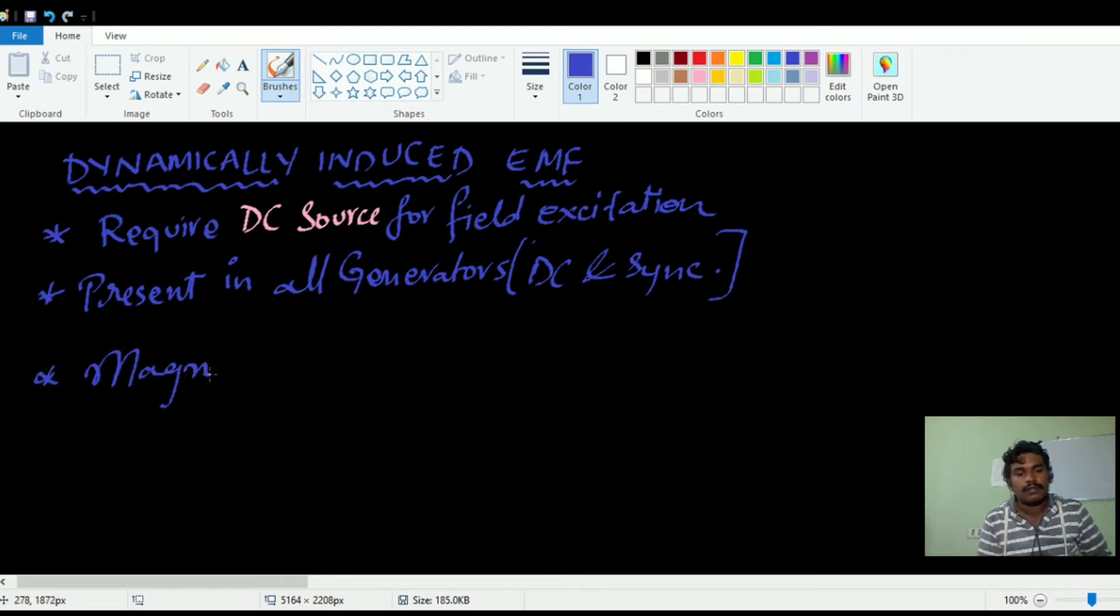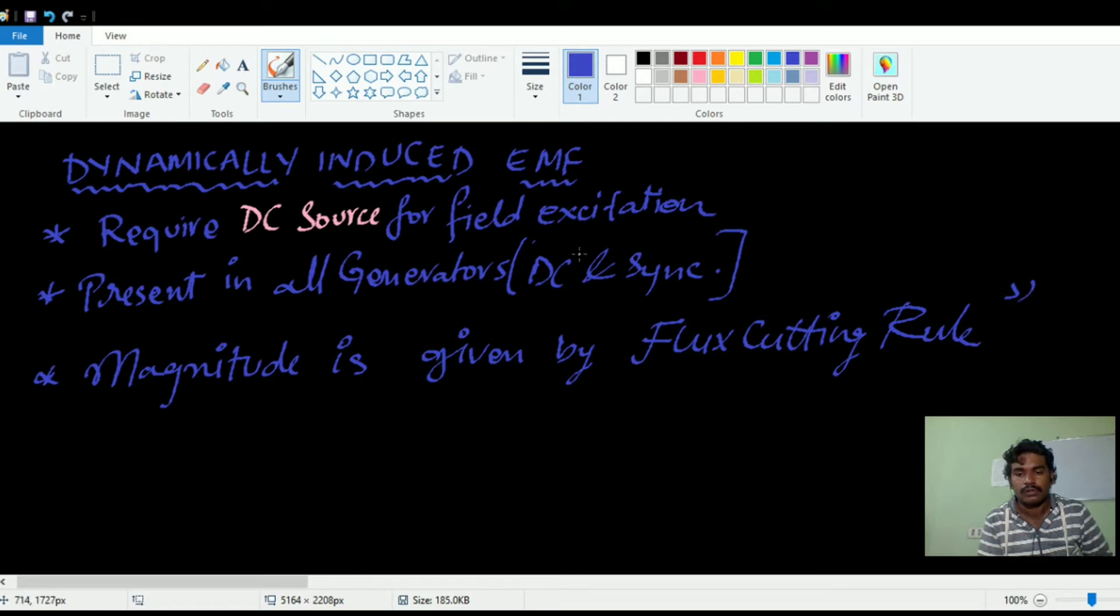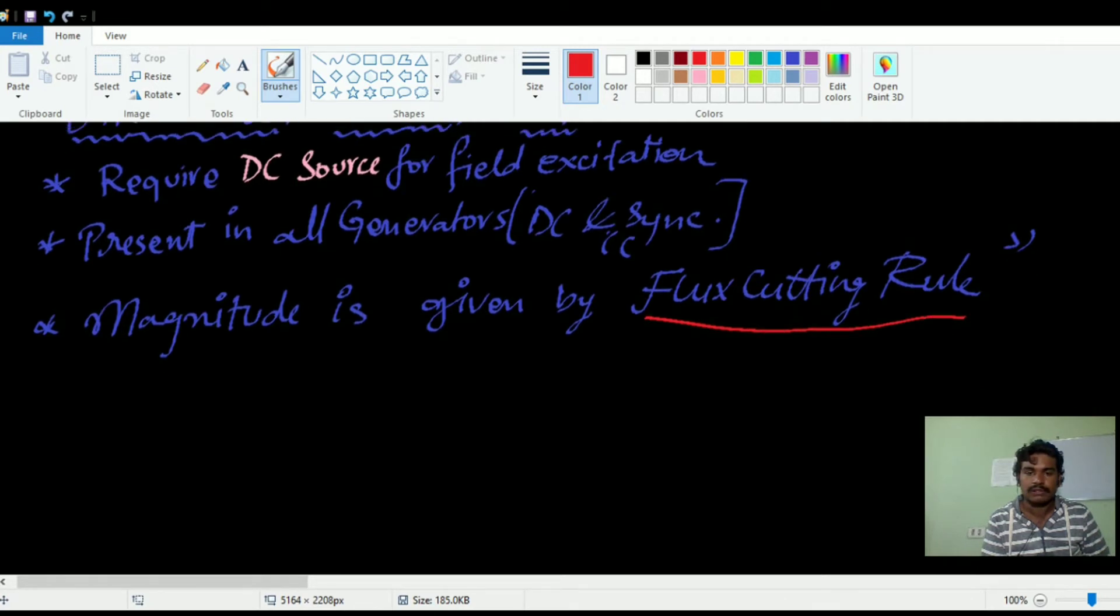magnitude is given by flux cutting rule. This is one important bit. The magnitude of dynamically induced EMF is given by flux cutting rule. So what does this flux cutting rule state?